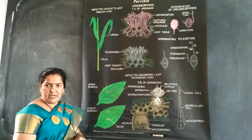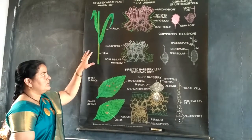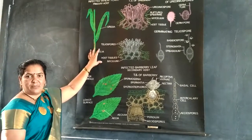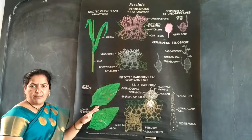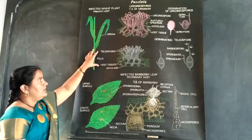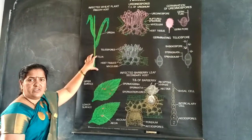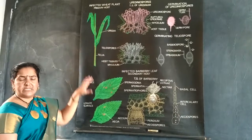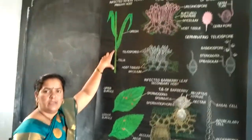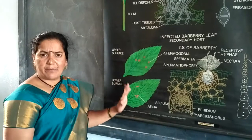Puccinia is a fungus that always occurs on the leaves of the plant. It produces basidiospores as prominent spores, hence it is included in the Basidiomycotina. Puccinia produces rust diseases on main crops such as wheat and jowar. It completes its life cycle within two hosts. Primary hosts are main crops such as wheat and jowar, while the secondary host is the barberry plant.